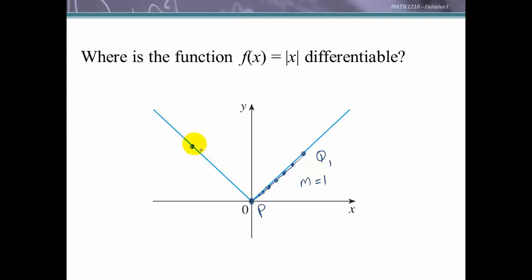However, if we look on the left-hand side and compute the slope of that line, we get m equals negative 1. As we move closer and closer to P — taking the limit as h approaches 0 of the slopes of secant lines from the left-hand side — that limit equals negative 1. Therefore the left-hand limit does not equal the right-hand limit, so the limit of the difference quotient does not exist at x equals 0. Therefore the derivative does not exist at x equals 0, and this function is not differentiable there.